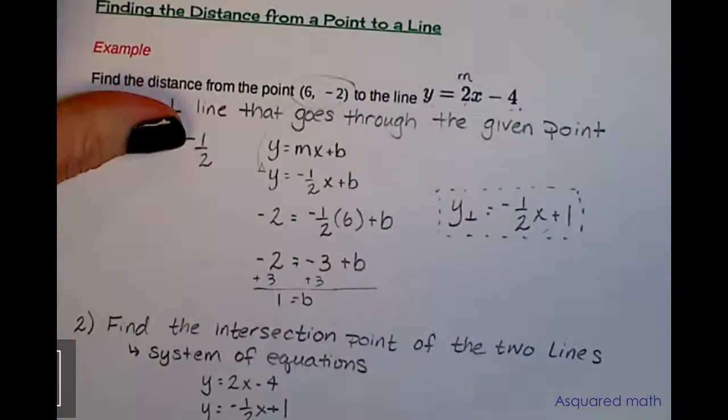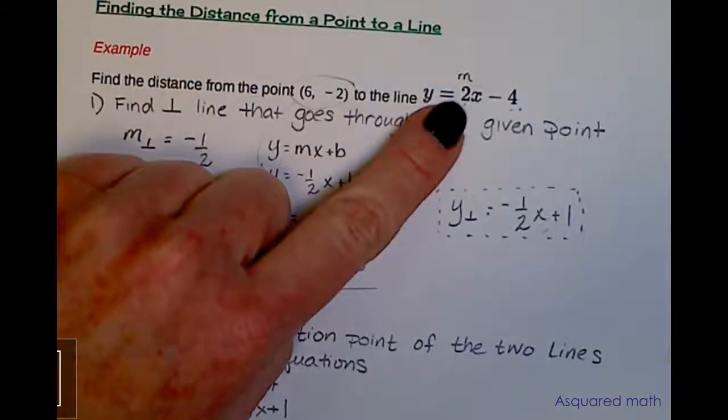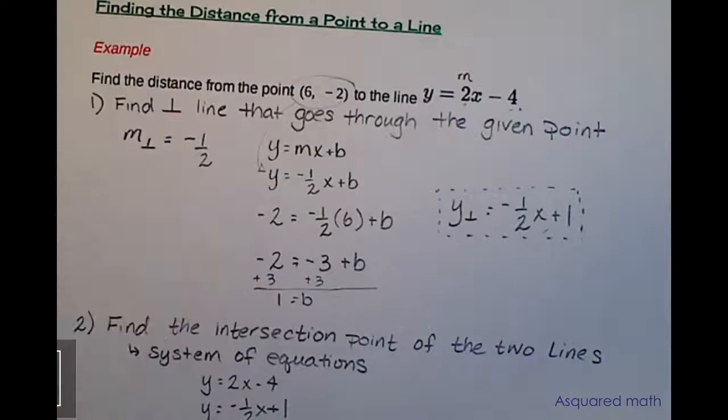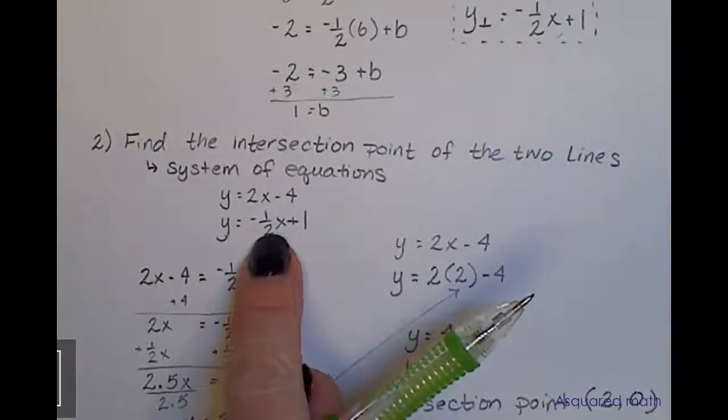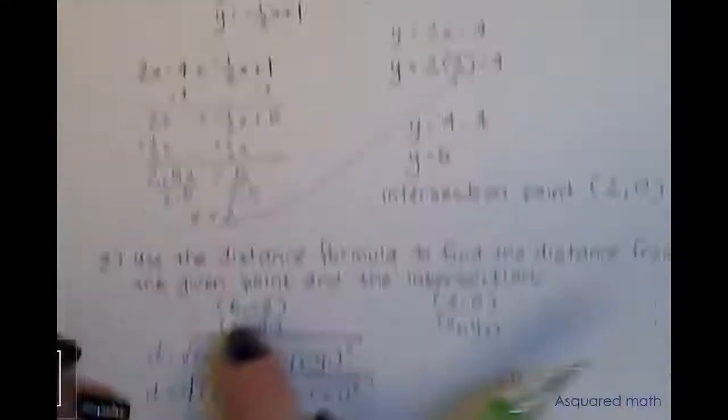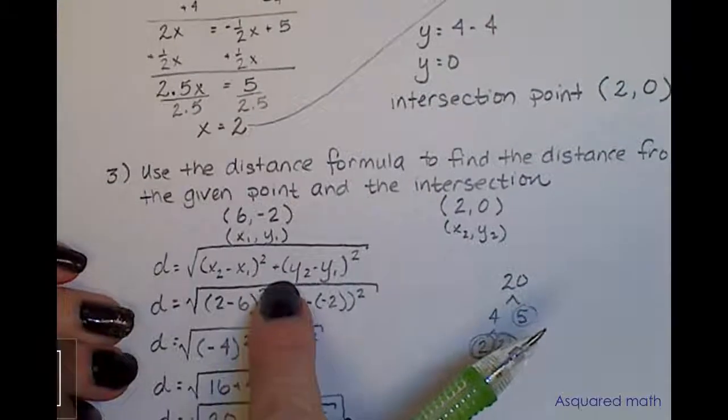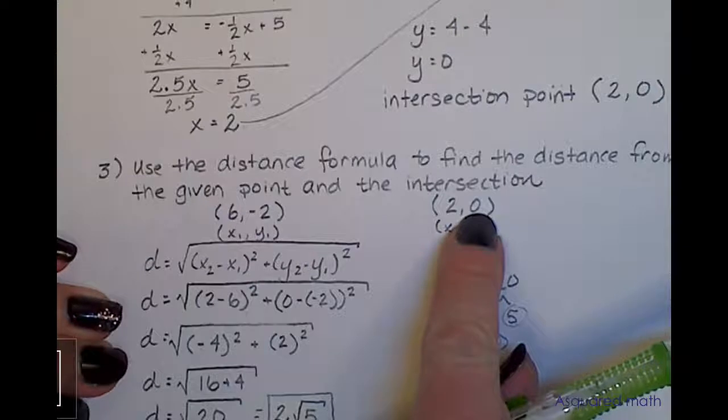Opposite reciprocal of the given slope. And then once you have that equation, use a system of equations to set them equal to each other to find that intersection point. And now that you have two points, you can use your distance formula to find the distance from that given point to that line, that intersection of the two lines there.